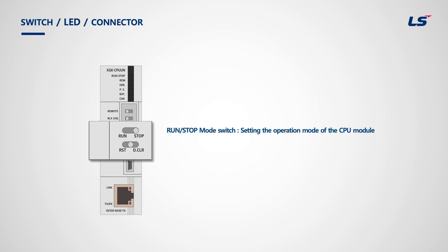The switches below are the run-stop-mode switch and the reset-data-clear switch. The run-stop-mode switch sets the operation mode of the CPU module. By moving the switch from stop to run, it will execute the program, and when moved from run to stop, the program will stop. However, the run-stop switch works prior to remote switch control, so in order for a user to operate the PLC using XG5000, the run-stop switch should be on stop and the remote switch should be on.